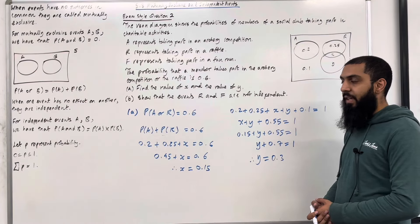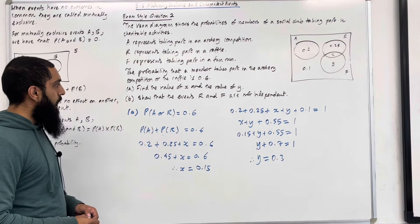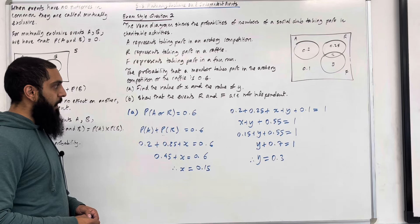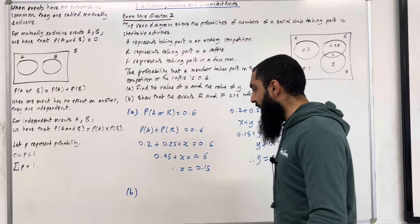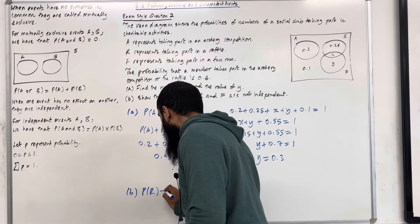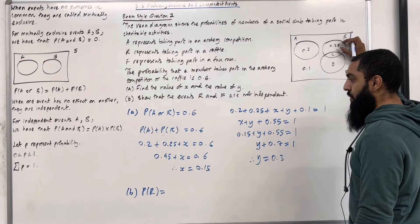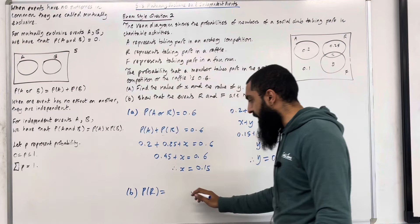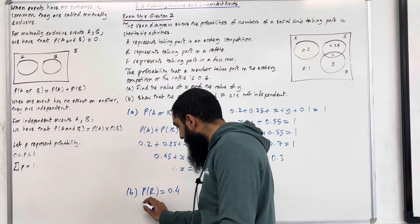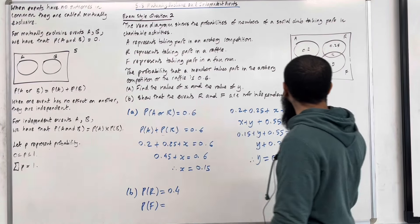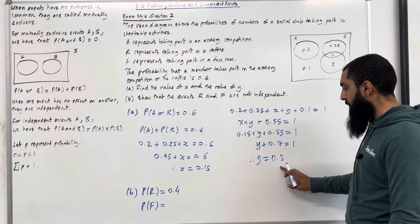This completes part A of exam style question 2. Let's have a look at part B: show that the events R and F are not independent. I'll begin by calculating the probability of R. The probability of R is 0.25 plus X, which is 0.25 plus 0.15, giving 0.4. Now I'll calculate the probability of F. The probability of F is X plus Y, which is 0.15 plus 0.3, giving 0.45.